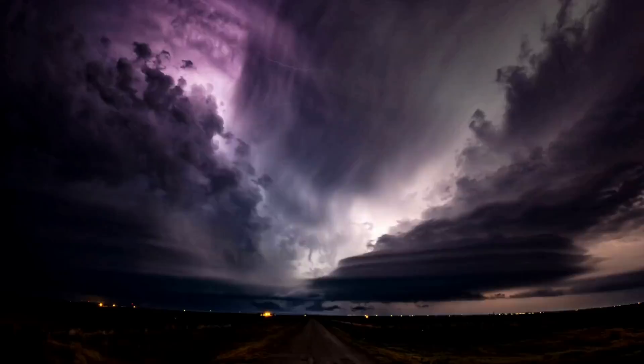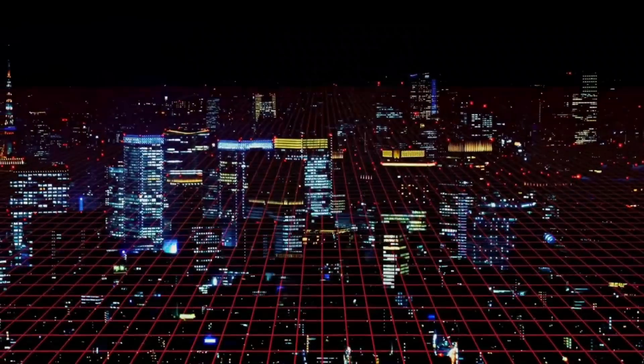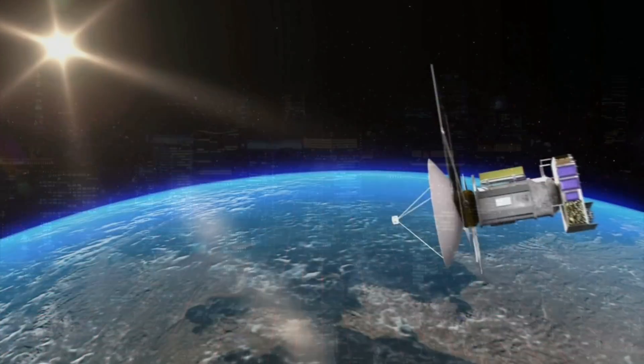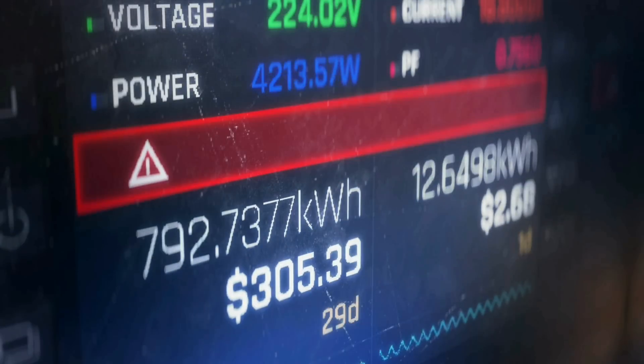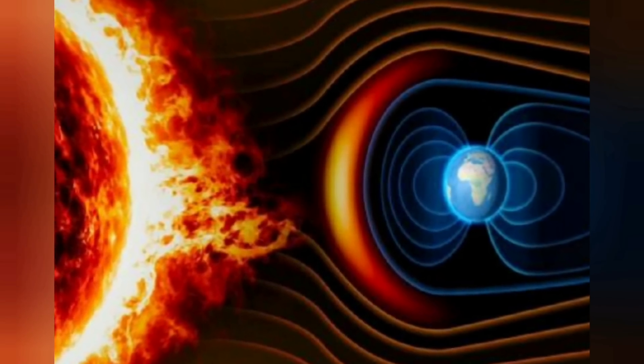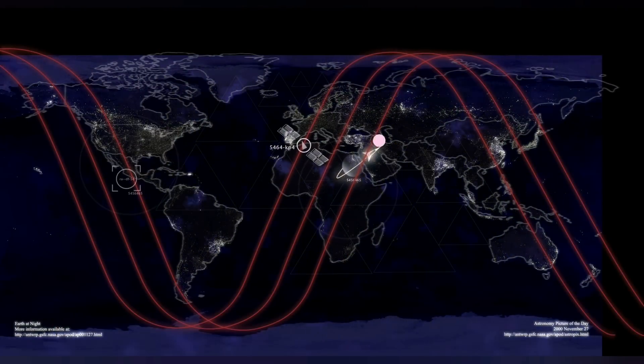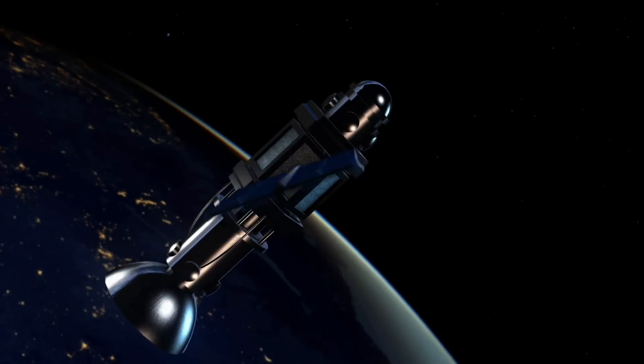Another result of these solar wind events is the creation of space weather that can impact technological systems on Earth, such as satellites and power grids. One of these events is a geomagnetic storm, which is a temporary disturbance of the Earth's magnetic field caused by the interaction of the solar wind with the magnetic field. Geomagnetic storms can cause changes that can impact satellite operations, navigation systems, and power infrastructure.